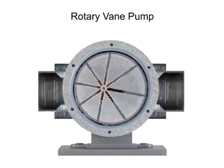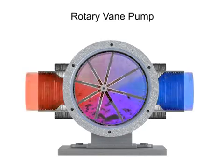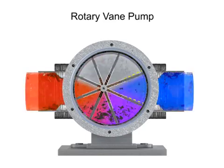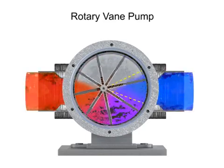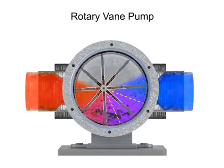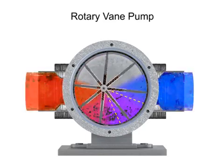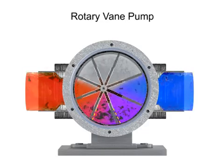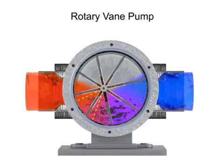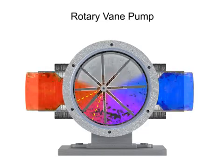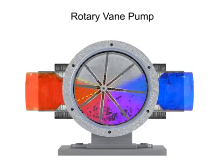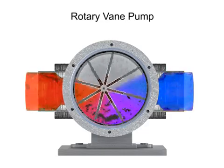Fluid enters at the largest chamber. As the vanes rotate and retract, the chambers get smaller, forcing fluid to exit through the discharge port.